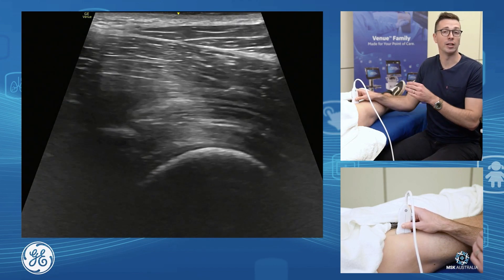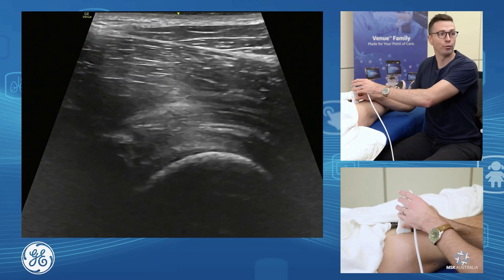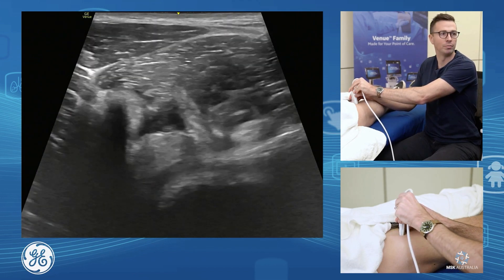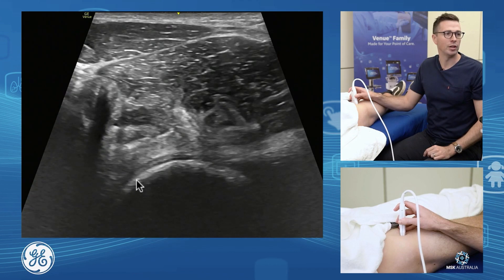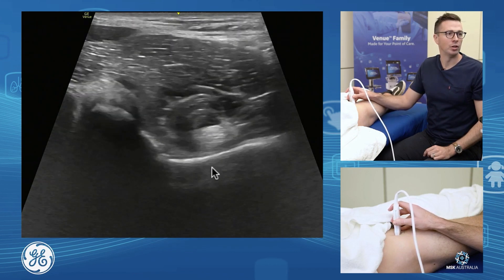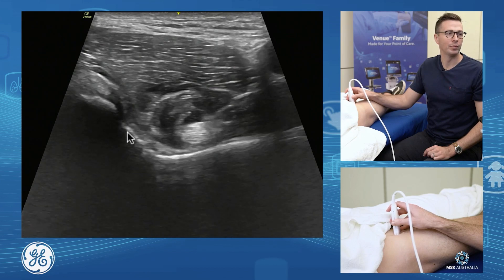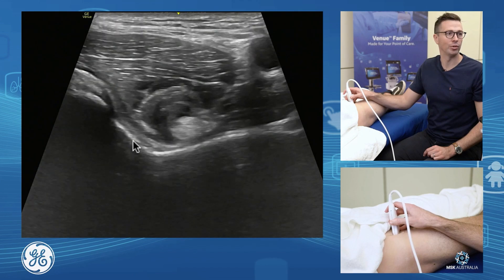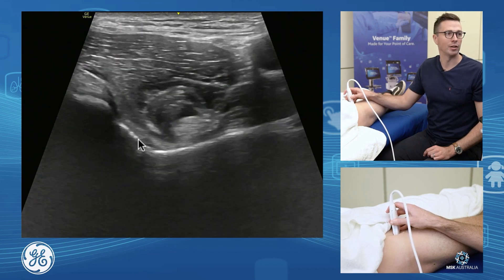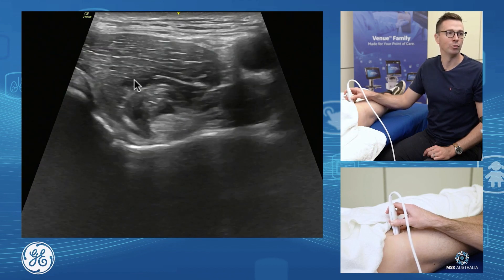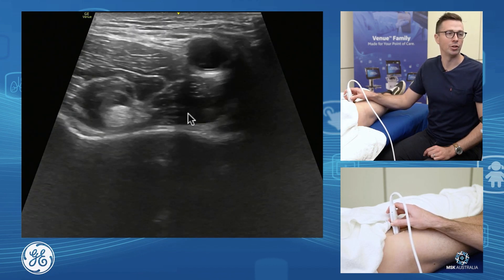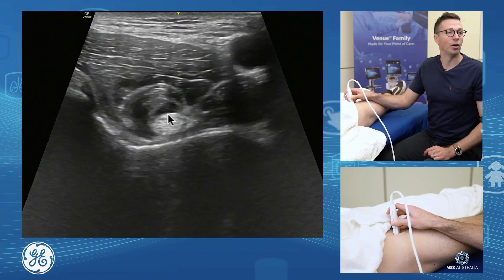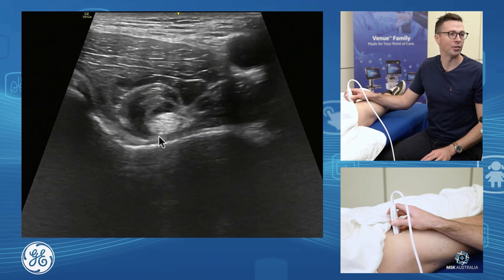From here we assess our iliopsoas complex. From the front of the joint, we get on that femoral head-neck junction and turn our probe 90 degrees. Here we are on the femoral head as we scan up onto the iliopectineal eminence of the acetabulum. We see our iliopsoas sitting on top — the medial fibers of our iliacus, lateral fibers of iliacus, residual fibers of our psoas, and neurovascular bundle sitting medially. We see our iliopsoas tendon sitting nicely on the iliopectineal eminence.